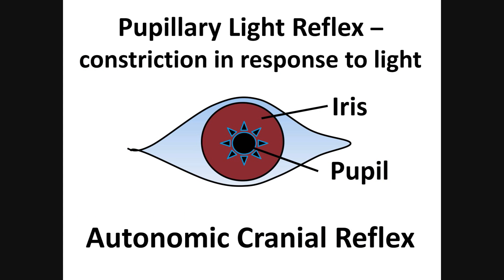Is this reflex somatic or autonomic? If the effector were a voluntary skeletal muscle, the reflex would be somatic. But the constrictor muscle is involuntary and smooth, which means the reflex is autonomic — it uses autonomic motor nerves, specifically parasympathetic fibers. The reflex is also cranial because the nerves involved are cranial, not spinal.